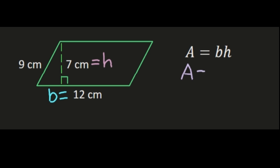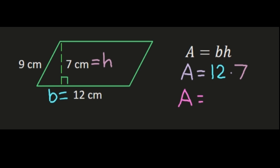So we're going to have area equals base times height. We'll substitute our base of 12 centimeters for B in our formula, times the height of 7 centimeters for H in the formula. That gives us area equals 12 times 7. 12 times 7 is 84, and since we measure area in square units, our area is 84 centimeters squared.